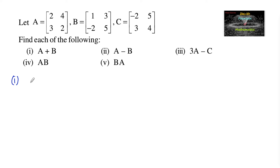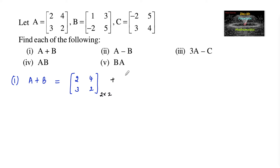The first one is A plus B. We know that the sum of two matrices is possible when their orders are the same. A is a 2 by 2 matrix having two rows and two columns, and B is also a 2 by 2 matrix. So these two matrices have the same order and addition is possible.